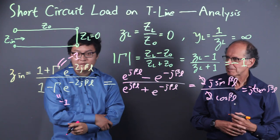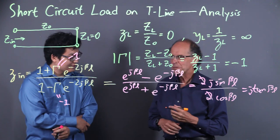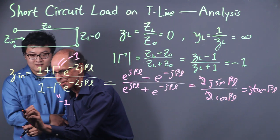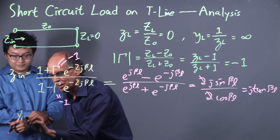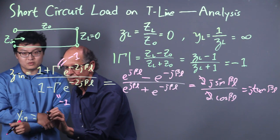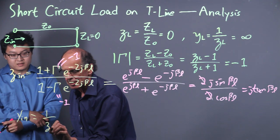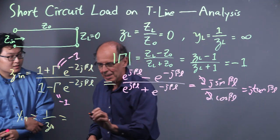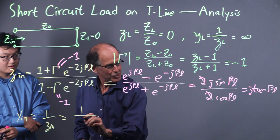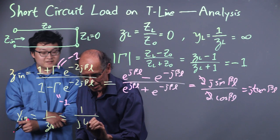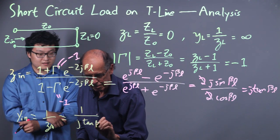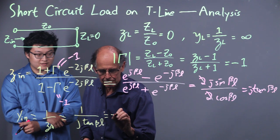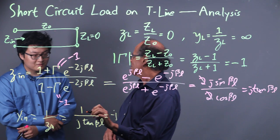Now let me see if I can do the input admittance. Y N equals 1 over Z N, small z n because it's normalized. That's the reciprocal. I think I can do this. Negative j cotangent beta L.